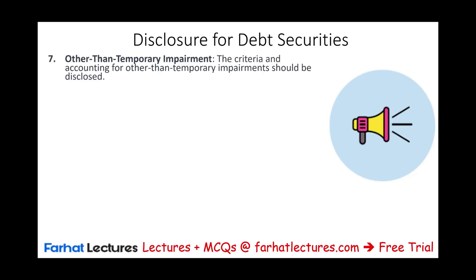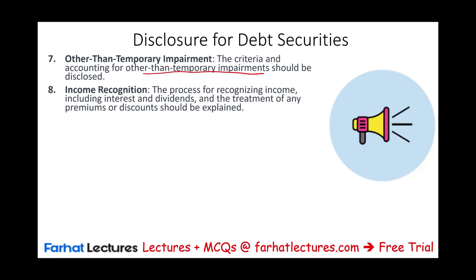We also need to show any other-than-temporary impairment — the criteria used to determine what qualifies as other than temporary. Temporary impairment is for a period of time and expected to recover; other-than-temporary means it's permanent — once we write it down, we don't expect to write it back up. For income recognition, when we have debt we're going to have interest, usually not dividends. We need to disclose the process of recognizing interest and the treatment of any premium or discount, since when we purchase a bond we could have a premium or a discount.